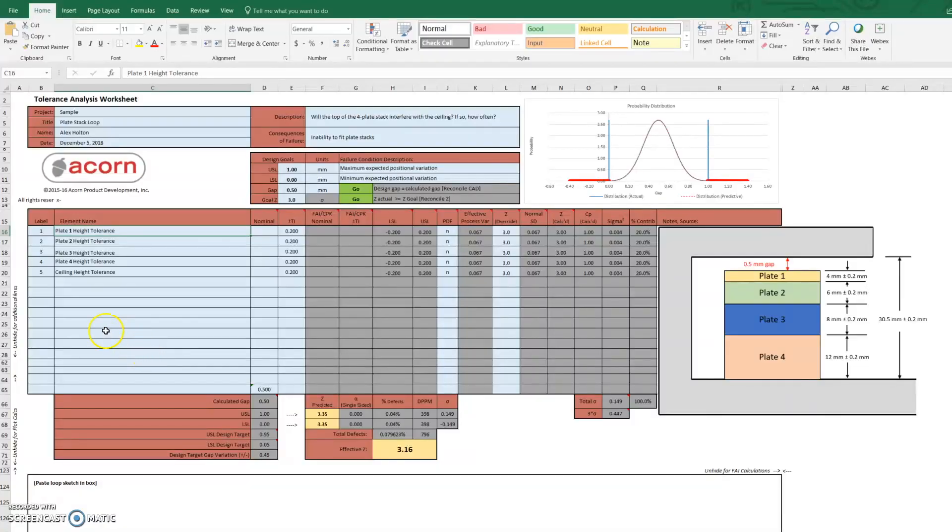Fortunately, we've created this tolerance analysis spreadsheet where we can plug in our elements, our tolerance values and gaps, and the spreadsheet automatically generates that aggregate distribution curve and other significant data points.